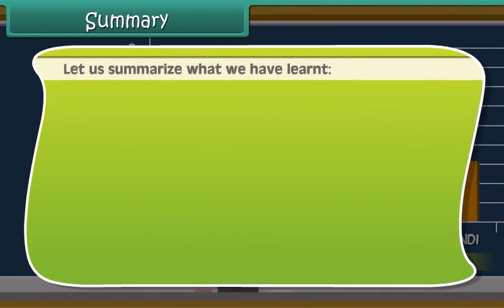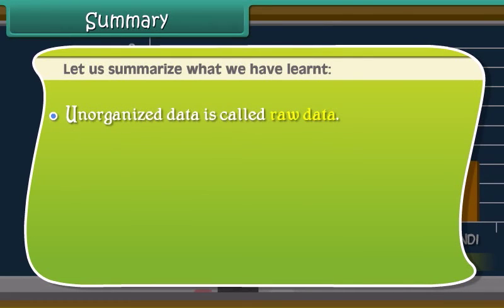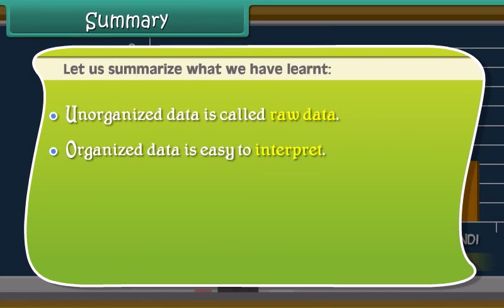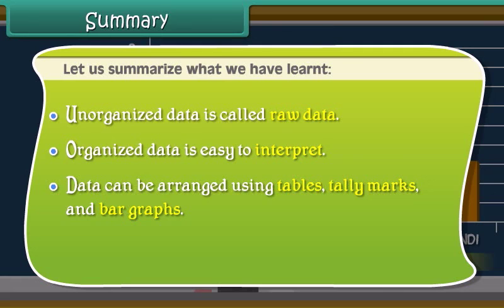Let us summarize what we have learned. Unorganized data is called raw data. Organized data is easy to interpret. Data can be arranged using tables, tally marks and bar graphs.